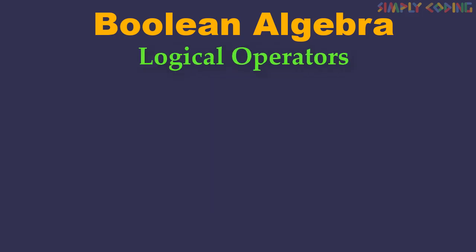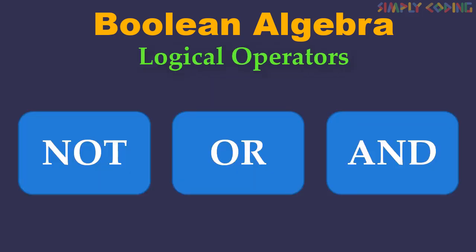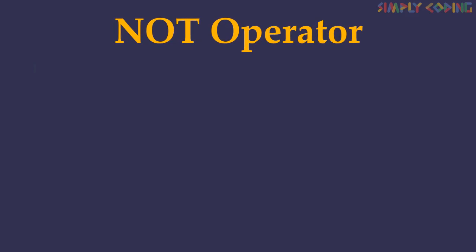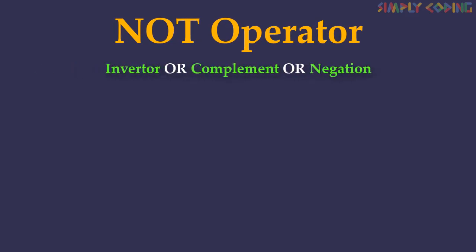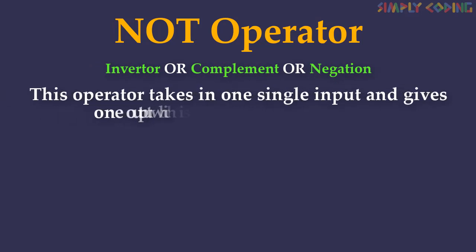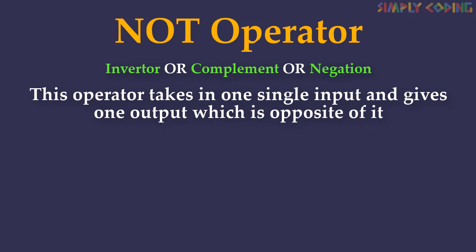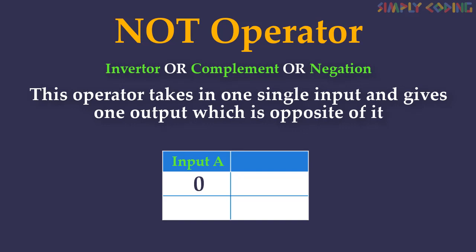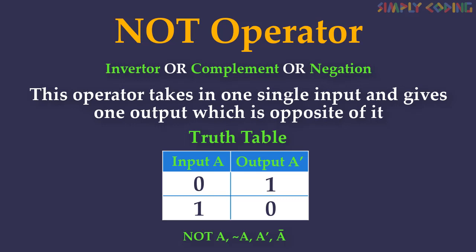We will now learn about the basic logical operators: NOT, OR, and AND, which are applied on variables to obtain the output. First is the logical NOT operator. This operator is also called an inverter, complement, or negation operator. It takes one single input and gives one output which is the opposite of it. So if you have input variable A with value zero it converts it to one, and if it is one it is converted into zero. It is denoted by a negation sign or a bar on top.